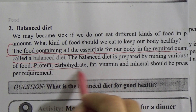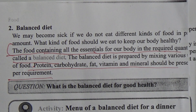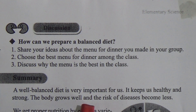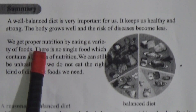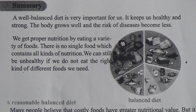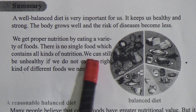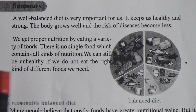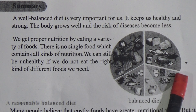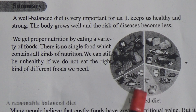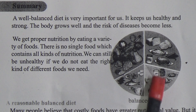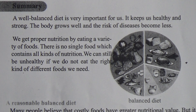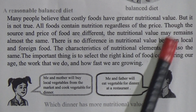A balanced diet is very important for us. It keeps us healthy and strong. The body grows well and the risk of diseases becomes less. We get proper nutrition by eating a variety of foods. There is no single food which contains all kinds of nutrients. This figure shows the chart of a balanced diet, including fruits, green vegetables, meat, fish, dairy products, and carbohydrates.